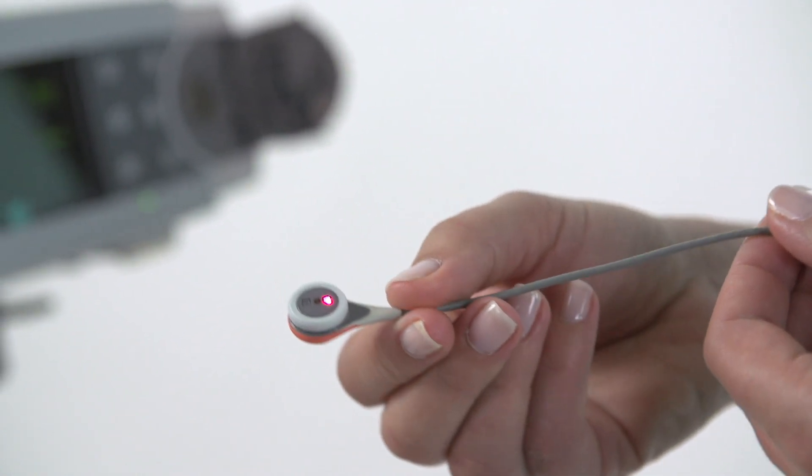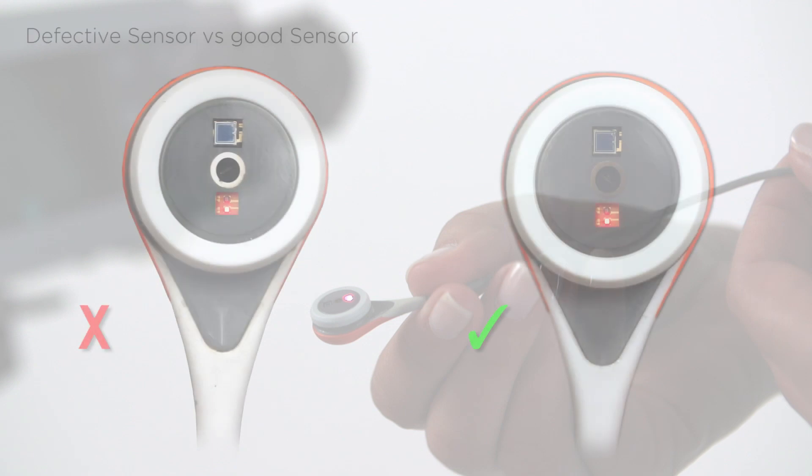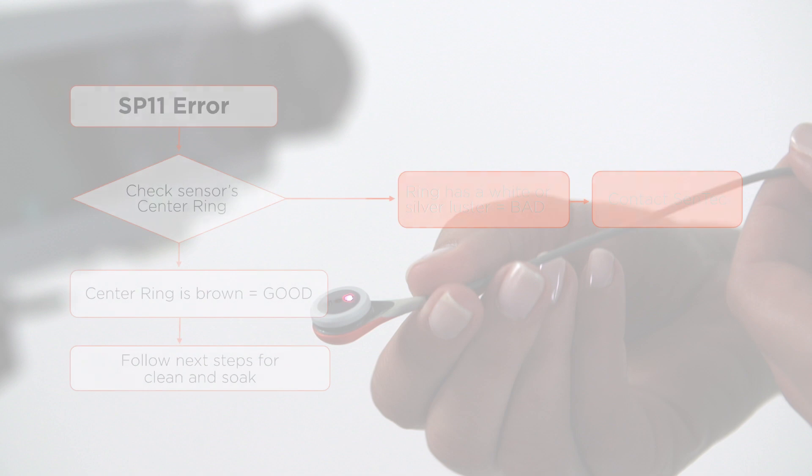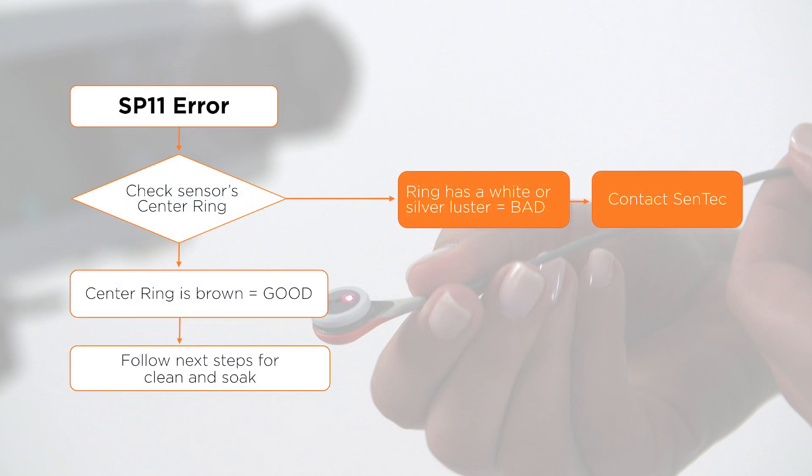Please contact Sentec if the ring has a white or silver luster as shown on the left sensor. The following steps will not resolve the error message.